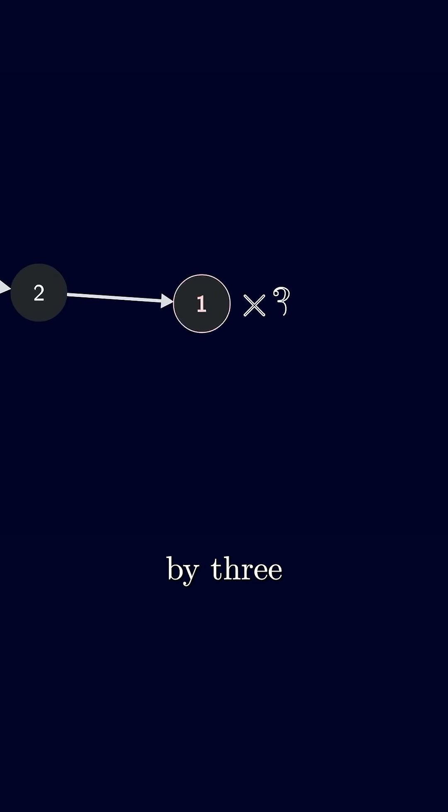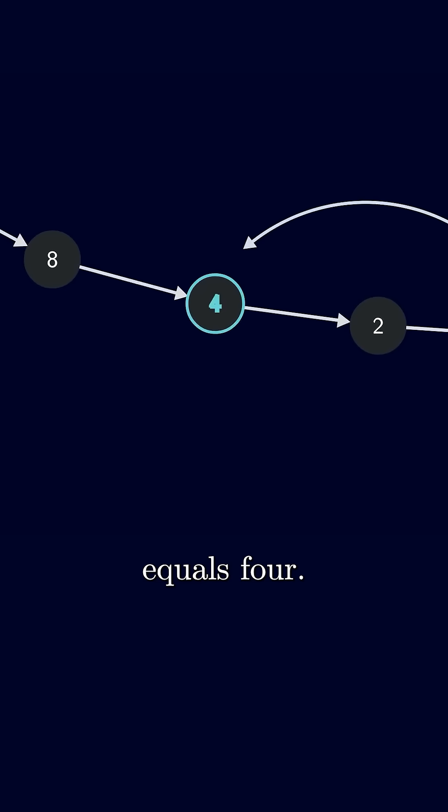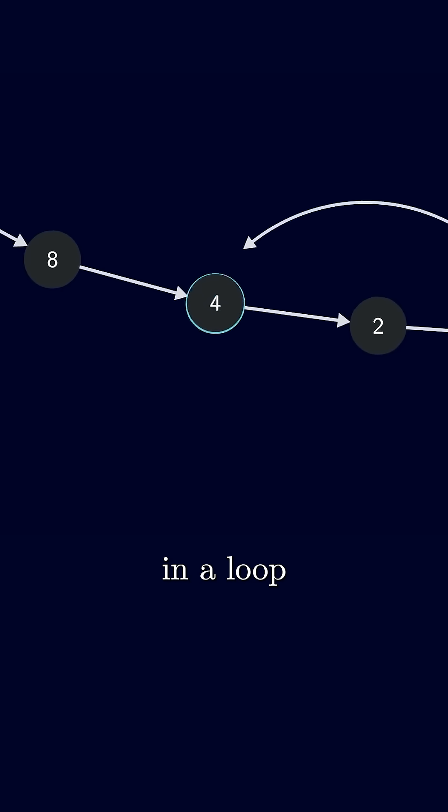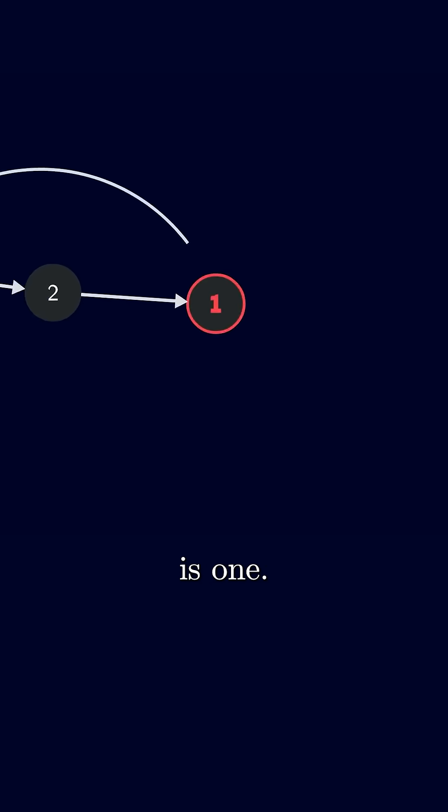Now one is odd, so we multiply by three and add one, which equals four, but four goes to two, goes to one. So we're in a loop and the lowest number is one.